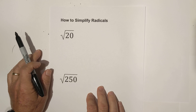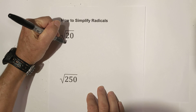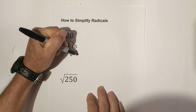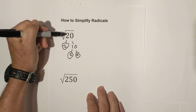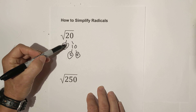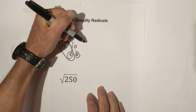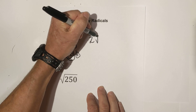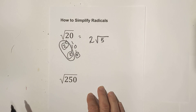I like to start with a factor tree, so let's begin with 20. We can go 2 times 10, circle the 2 because it is prime, and then 2 times 5. Now we're down to prime numbers. Since it is a square root, we pull out pairs of prime numbers. We have one pair of 2s, so it goes outside the radical sign, and we have a 5 left inside. So simplified, the square root of 20 becomes 2 square root 5.